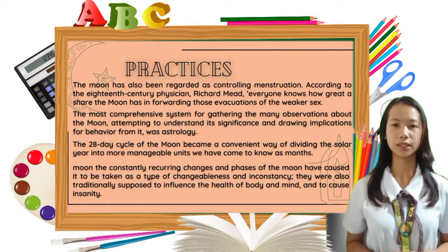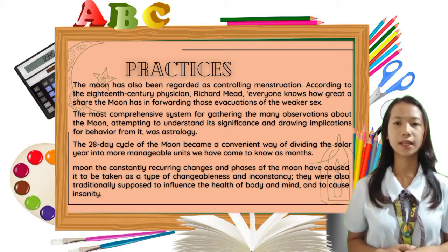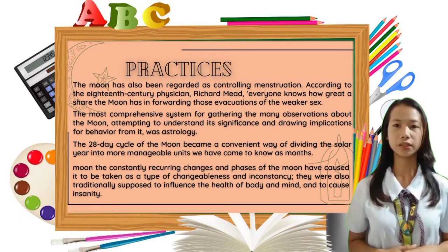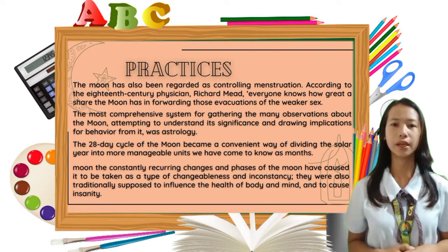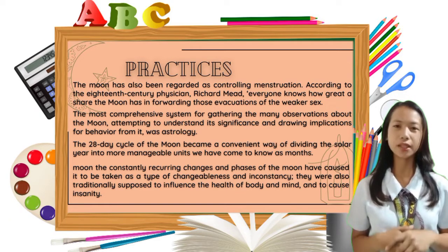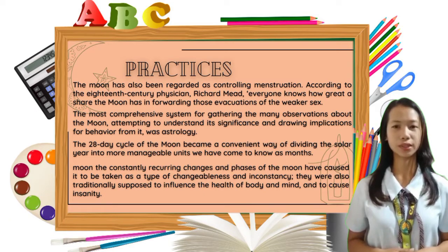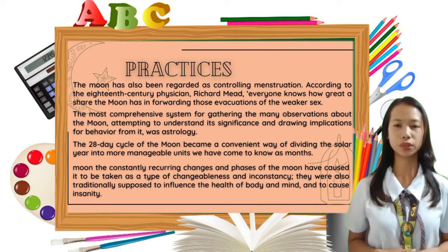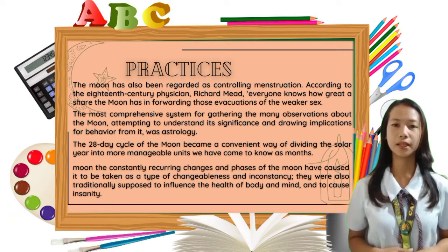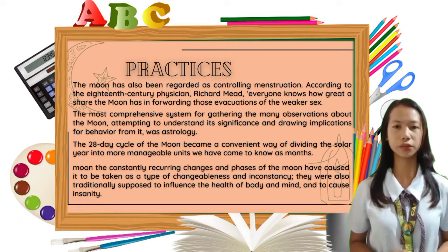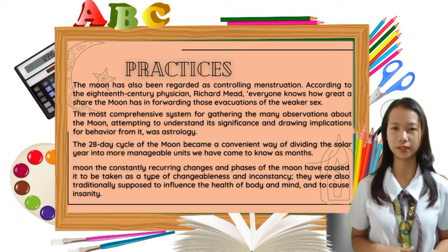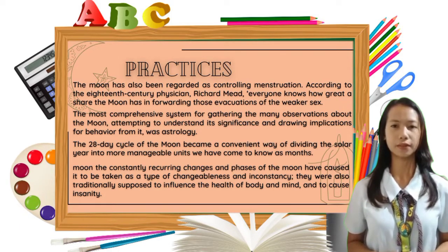The constantly recurring changes and phases of the moon have caused it to be taken as a type of changeableness, and in its constancy they were also traditionally supposed to influence the health of body and mind and to cause insanity. In astrology, the moon represents the inner emotional side of the self, the subconscious mind and the psyche. The moon's placement in the chart reveals the creative side of the person, where he or she might give birth to new ideas, how his or her nurturing side is expressed, or where great passion is resting. The moon is paired with the sun related to the overall aspects of one's outer visible life.